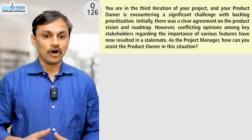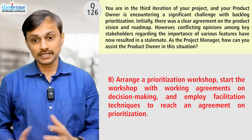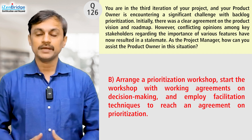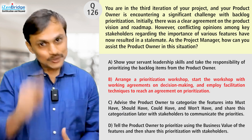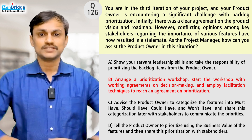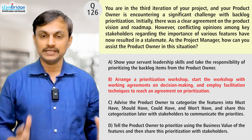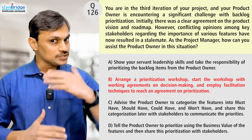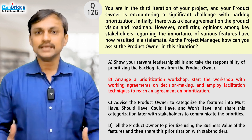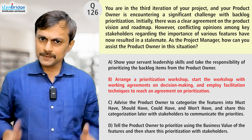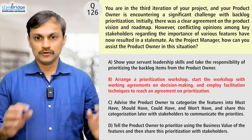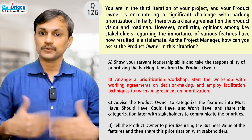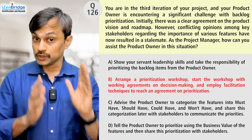Option B: arrange a prioritization workshop, start the workshop with working agreements on decision-making, and employ facilitation techniques to reach an agreement on prioritization. This one is actually also a form of servant leadership — you are saying 'I will help you by running the facilitated workshop.' We expect the project manager to demonstrate good facilitation skills and help the product owner get the facilitation right, not by providing advice or decisions, but by providing the right facilitation. So this is a good candidate option.